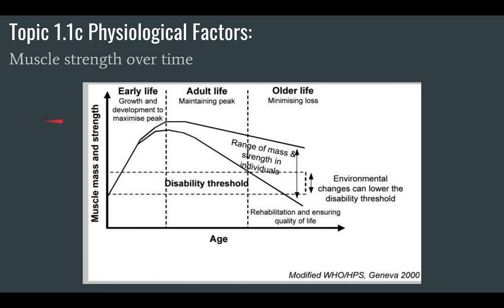Let's talk about muscle strength. Over time, your ability to use muscle strength changes. When you're very young you're not very strong, but as you get into adult life your muscle strength will peak and then drop off. This is something you need to think about as you're designing. If you're designing for younger people or young adults in their late teens, they'll be at their strongest, so you can have things that take more muscle strength to manipulate. But as you're designing for older people, you would want to reduce that.